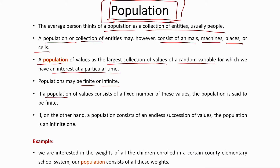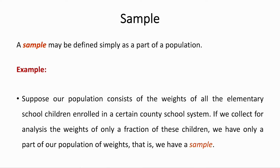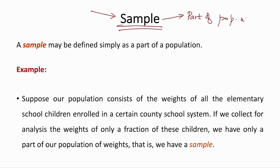If a population consists of a fixed number of values, it is finite; if it consists of an endless succession of values, it is infinite. Because populations are too large to analyze directly, we pick a small part of the population and assume it can represent the entire population. That particular part used to understand the population is called a sample — a part of the population used for analysis.